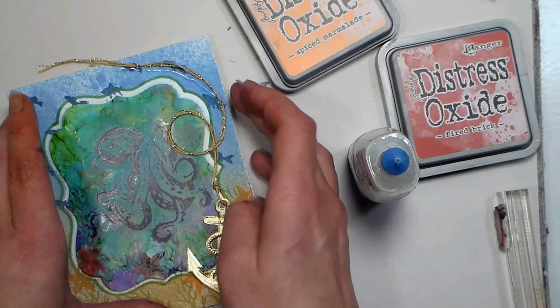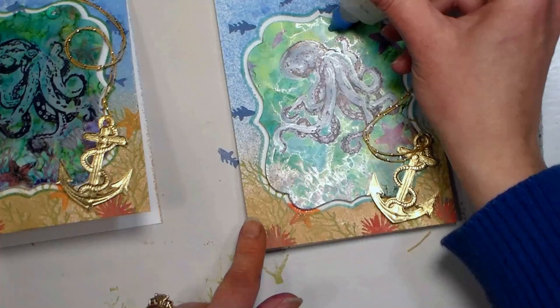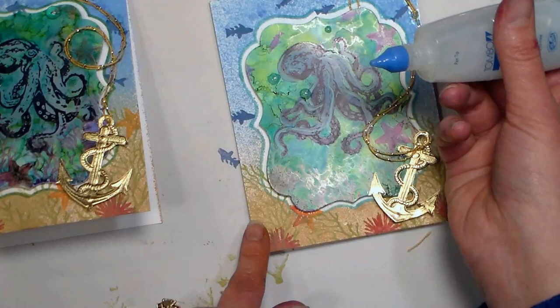Before you glue it down, just kind of play with your arrangements, and get it just the way you want it, and then just kind of secure it with a couple little drops of glue. I also recommend that you trim the thread so it's flush with the edge of your card, and seal those ends down good with some glue so it doesn't fray or pull up.